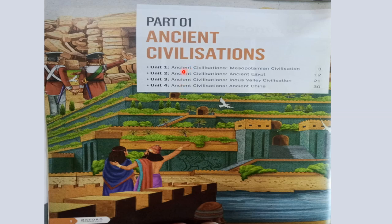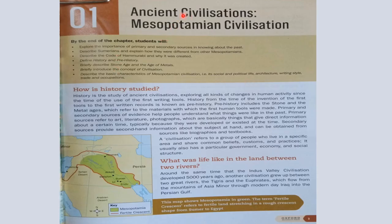Part One is Ancient Civilizations. Unit One is the Mesopotamian civilization. How is history studied? History is the study of ancient civilizations, exploring all kinds of changes in human activity since the time of the first writing tools. History from the time of the invention of the first tools to the first written records is known as prehistory.